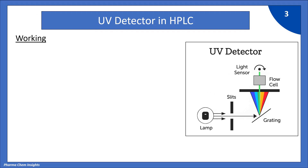Now let's see the working of UV detector in HPLC. You can see the schematic diagram of UV detector on the right hand side. It consists of a lamp, a slit, then a grating, then one more slit, a flow cell, and a light sensor. These are the components of UV detector.